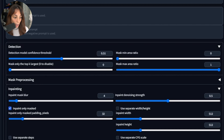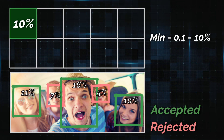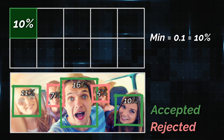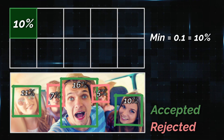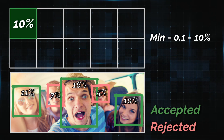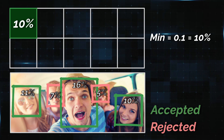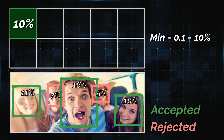Another important setting is the Mask Min Area Ratio and Mask Max Area Ratio. These control the minimum and maximum area of the detected mask that is allowed. If the minimum area is 0.1, the model will reject all areas which have a mask smaller than 10% of the overall picture size.